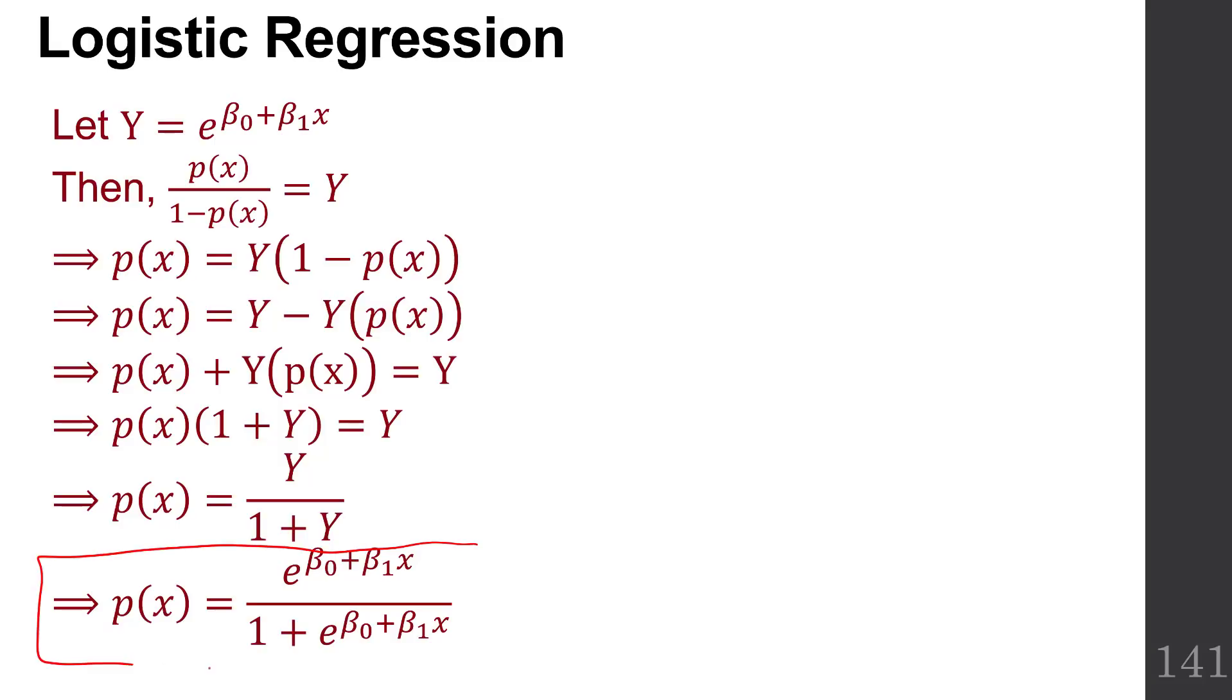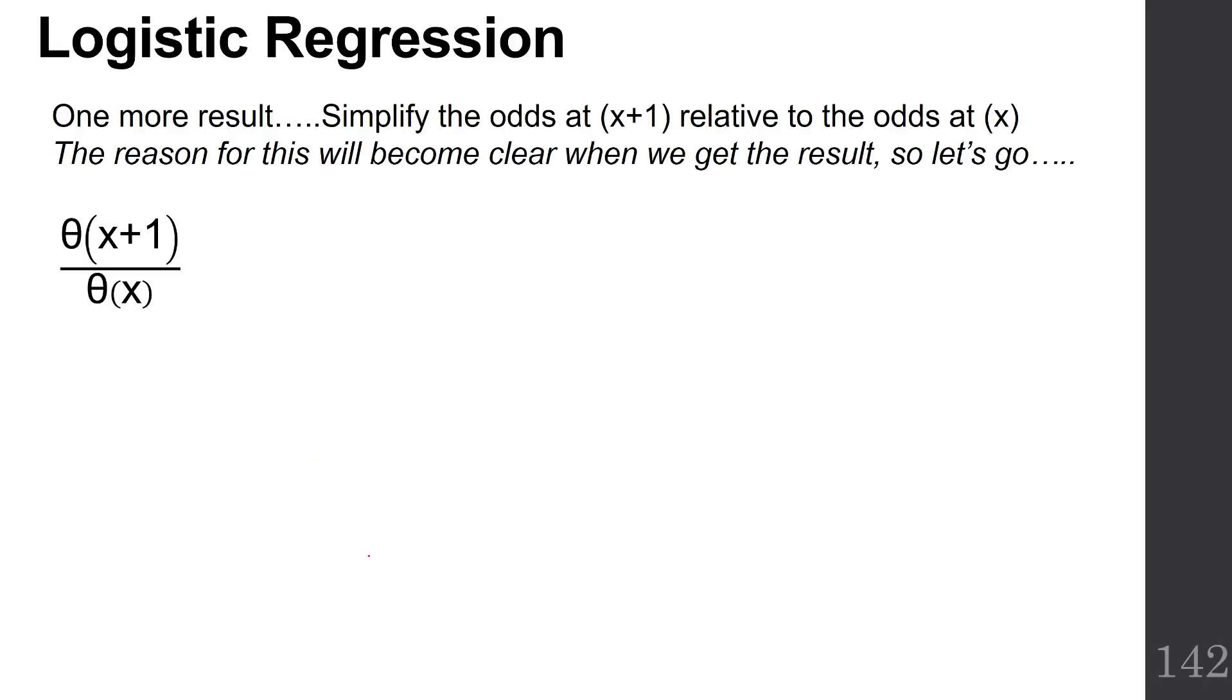Substituting the e to the beta naught plus beta 1x back in for y, we have the following formula. So now we've got a formula that we can plug in. If we can estimate these coefficients, the beta naught and beta 1, we can plug it into this formula and get an estimate of the probability of metastasis.